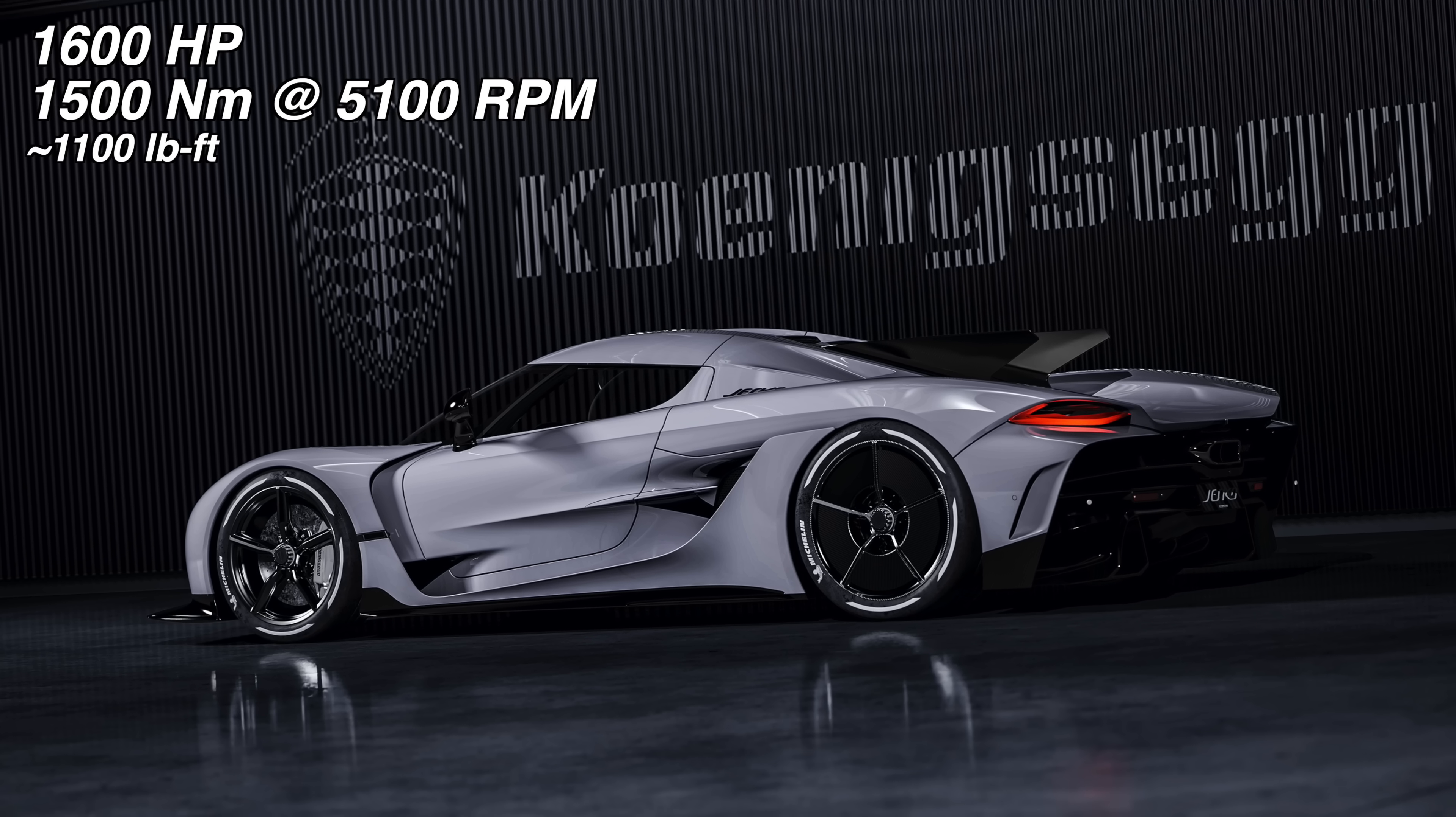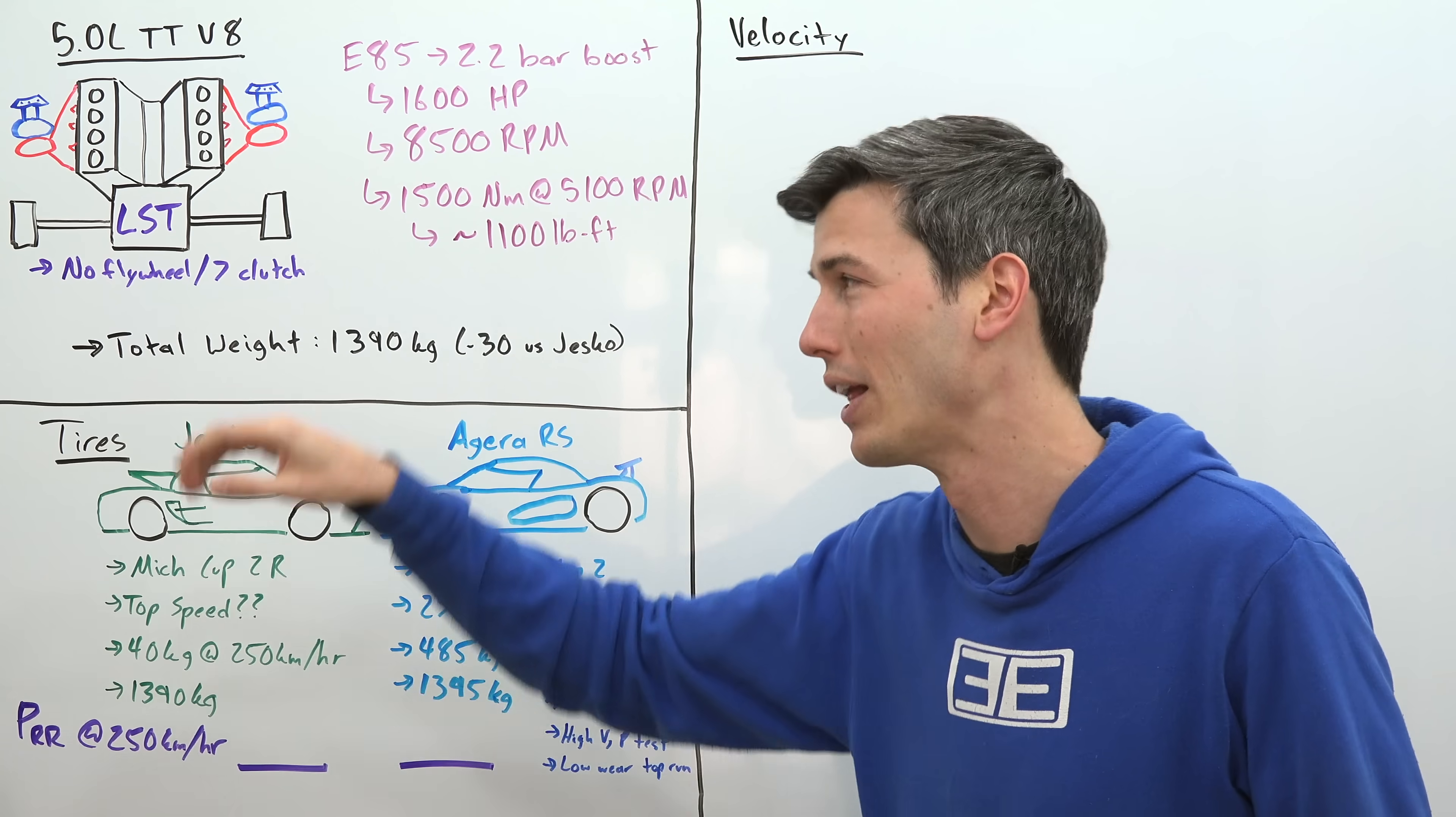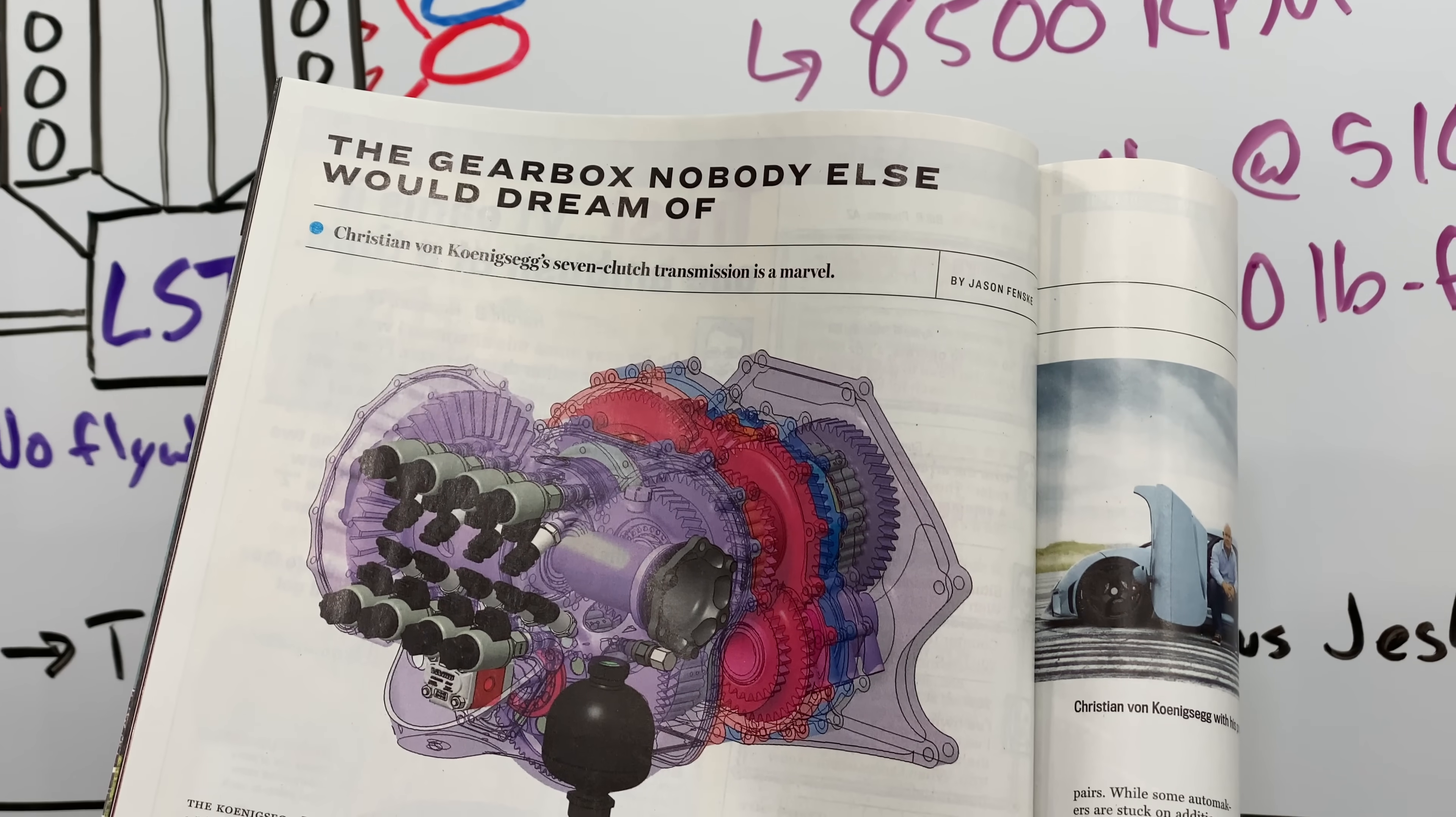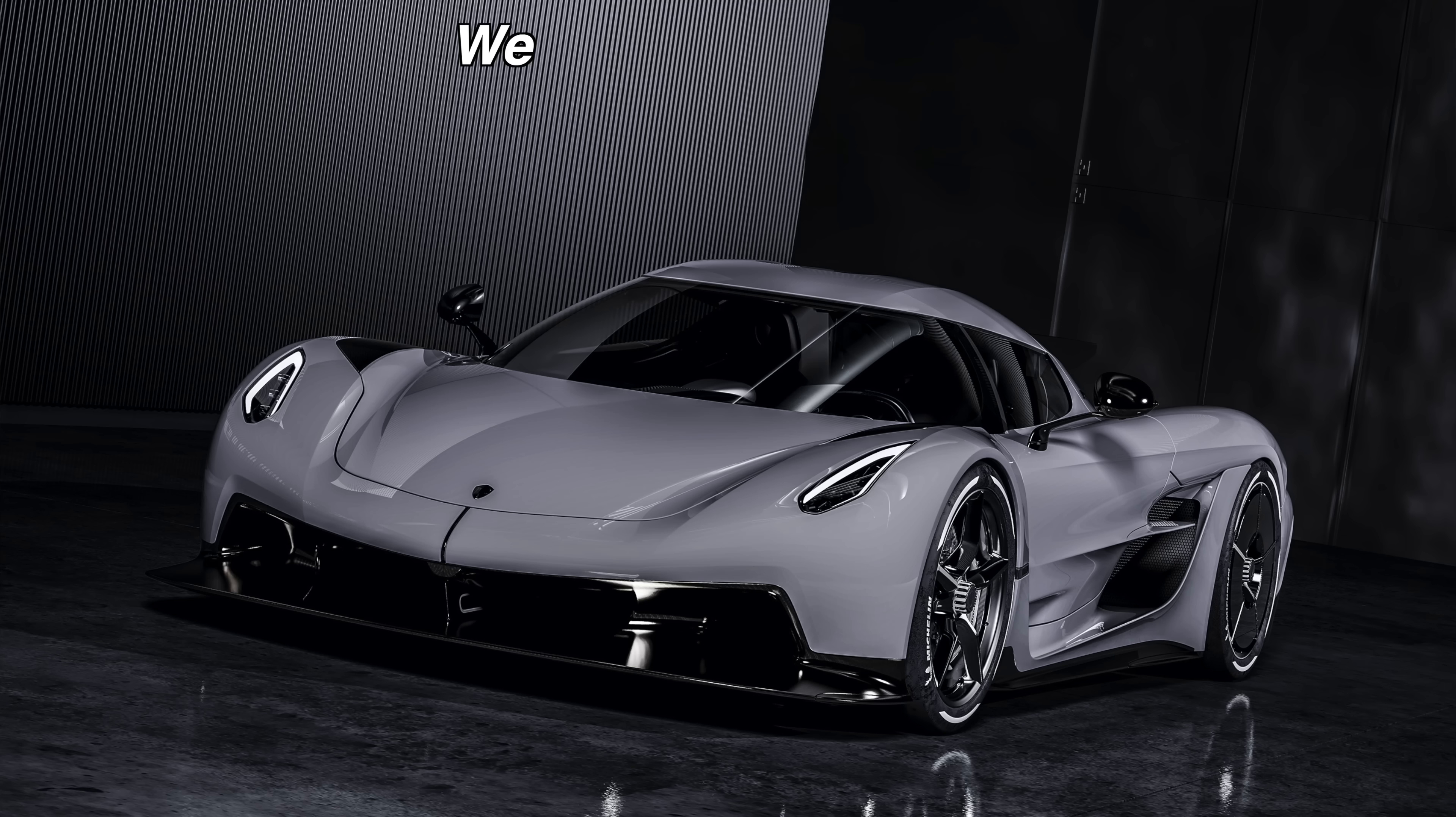Now this engine makes 1500 Newton meters, or about 1100 pound-feet of torque at 5100 rpm, so it is quite a potent engine. That torque is sent through the light-speed transmission - this is a super cool seven clutch transmission. It doesn't have a flywheel. You should check out my video on that if you haven't yet already. It's a very cool transmission that they use for this vehicle and then sends the power from that transmission out to the two rear wheels.